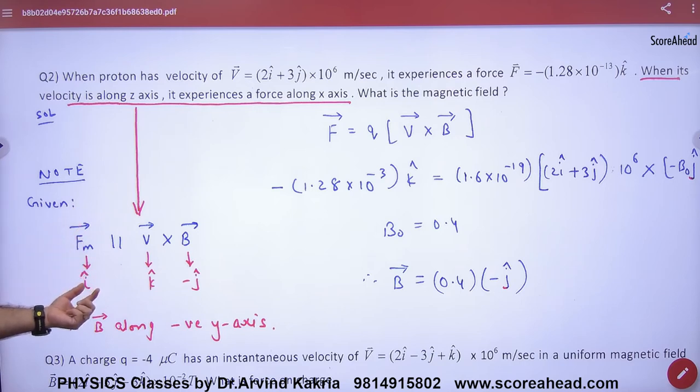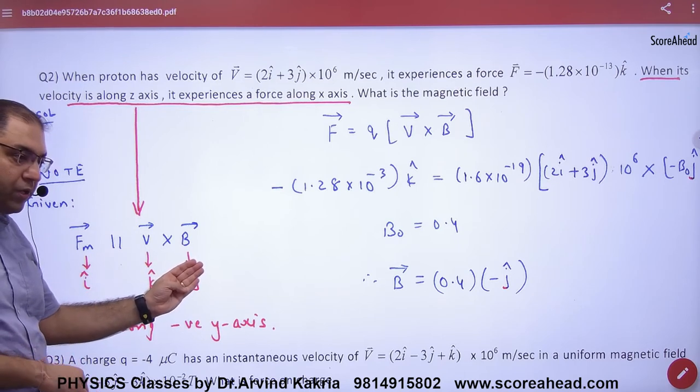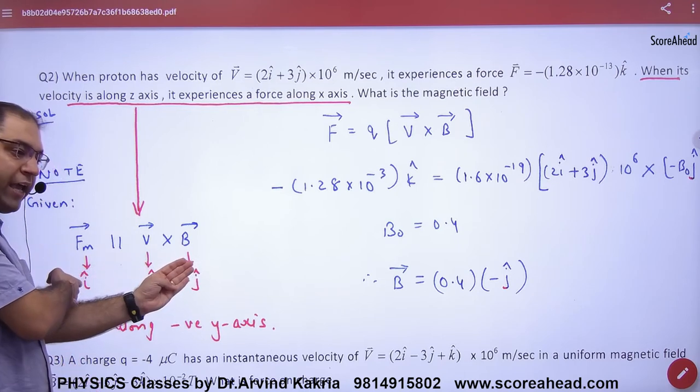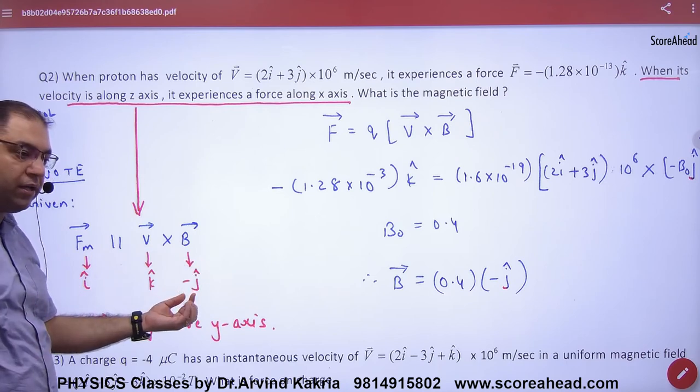So if this I cap is given in this line, this is K cap. Then tell me which cap I will put here so that I multiply it by I cap. So what will be the answer? Minus J cap.